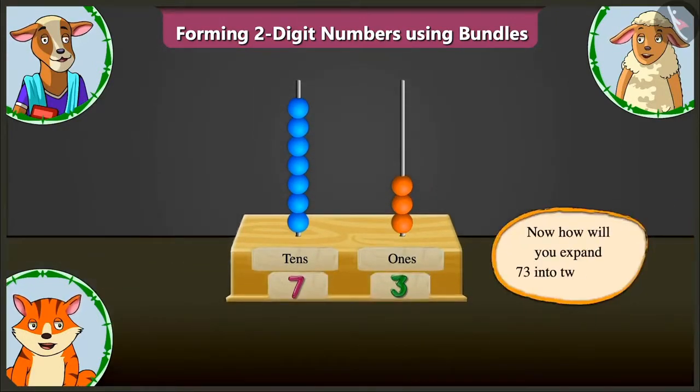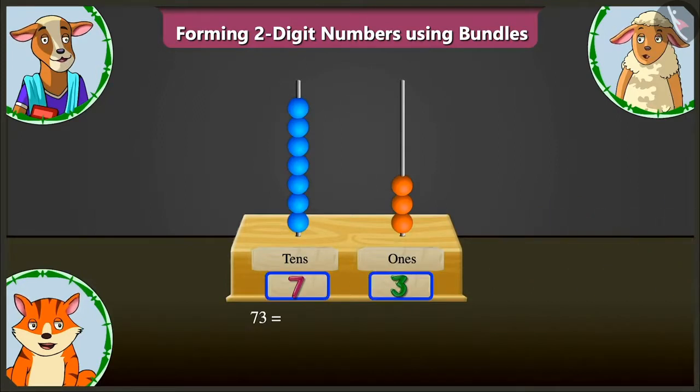Now, how will you expand 73 into two parts? 73 means seven tens and three ones, meaning its two parts will be 70 and 3. Well done.